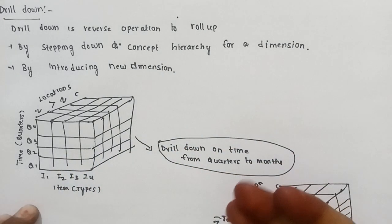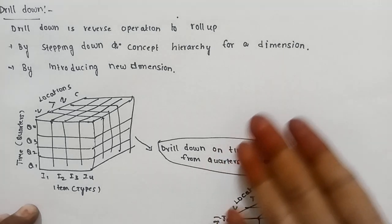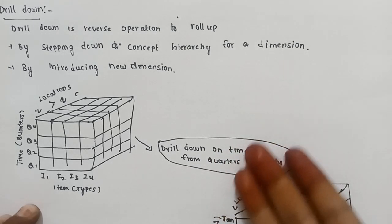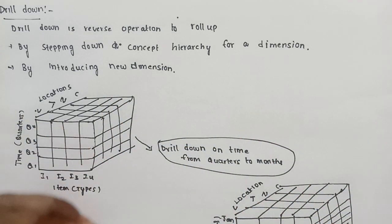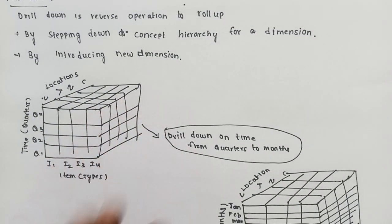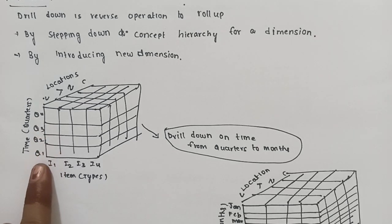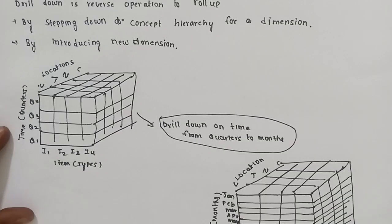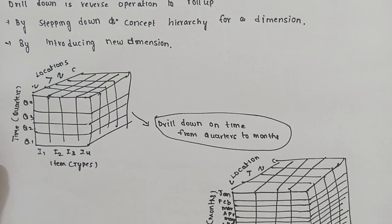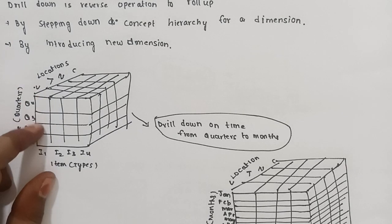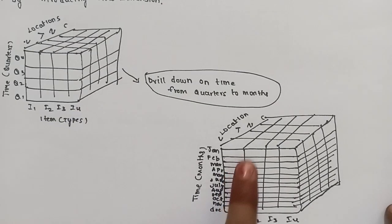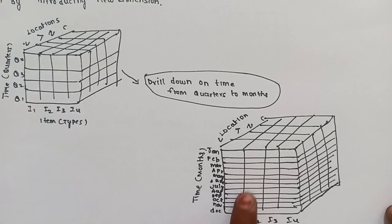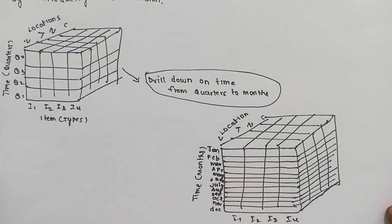In the concept hierarchy, we need to increase the dimensions by introducing new dimensions. For example, in the same cube, the time dimension has four quarters: Q1, Q2, Q3, Q4. In drill down, each quarter is broken into 3 months. So four quarters become 12 months — the dimensions are increased. This is the drill down operation.